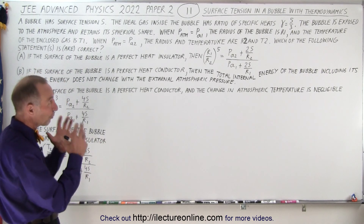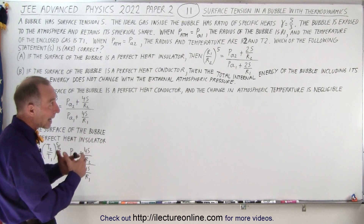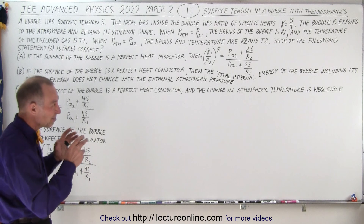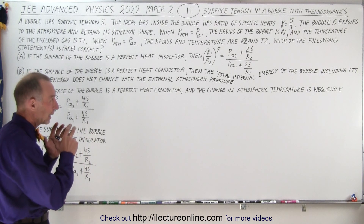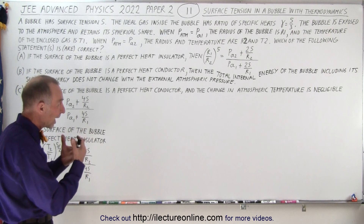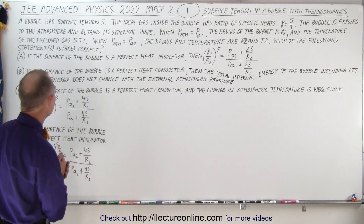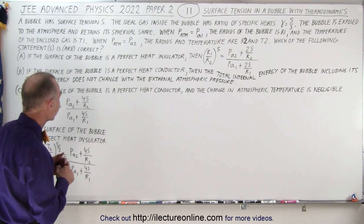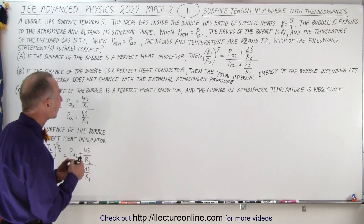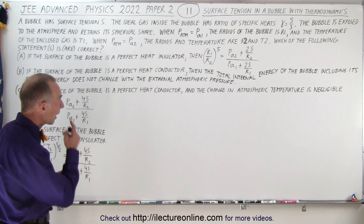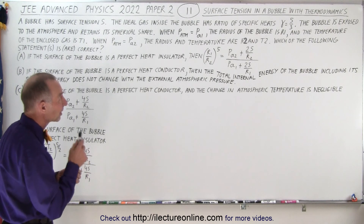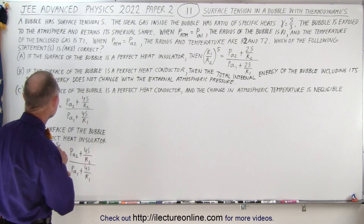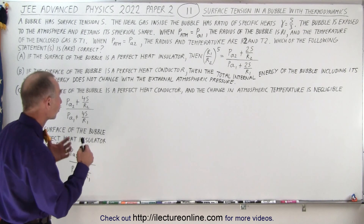This problem deals with surface tension in a bubble and thermodynamics. Although the surface tension may not be the key element, it does add some additional complexity. We have a bubble with a surface tension equal to S. The ideal gas inside the bubble has a ratio of specific heats gamma equals 5 over 3. The bubble is exposed to the atmosphere and retains its spherical shape.